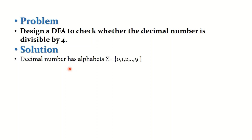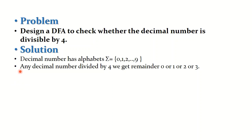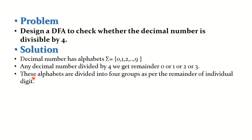All the decimal numbers are represented with the digits from 0 to 9, hence we write Sigma as {0, 1, 2, ... , 9}. Any decimal number, if it is divided by 4, we get remainders either 0, 1, 2, or 3. These digits are divided into four different groups as per the remainder of each individual digit.